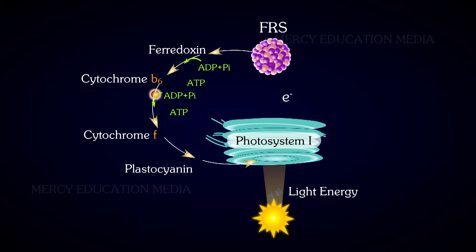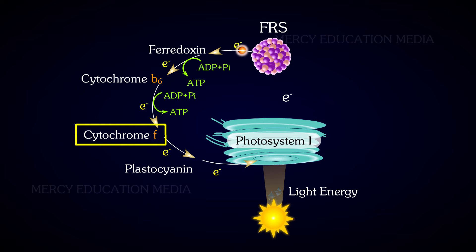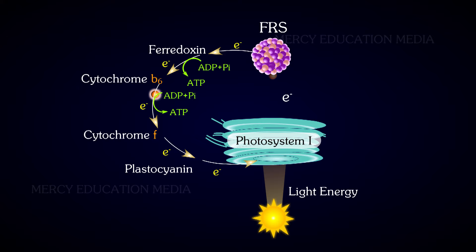When the molecule in PS1 is excited, the electrons are released. The electrons are captured by ferredoxin through the ferredoxin reducing substrate, i.e. FRS. Due to the non-availability of NADP+, electrons from ferredoxin fall back to the molecules of PS1 through the electron carriers cytochrome B6, cytochrome F, and plastocyanin. These electron carriers facilitate the downhill transport of electrons from FRS to PS1.